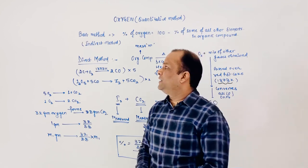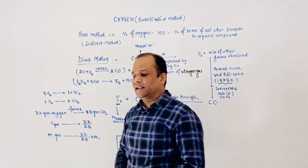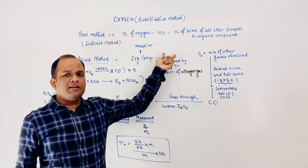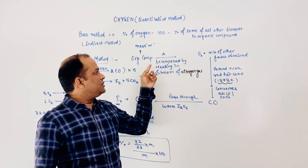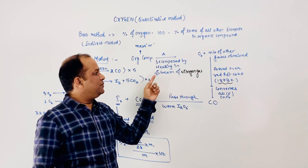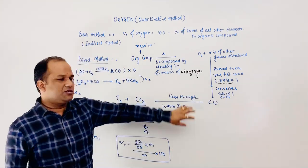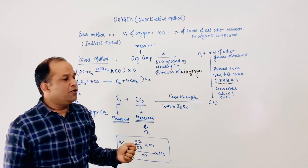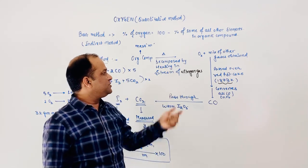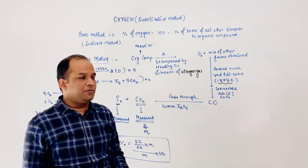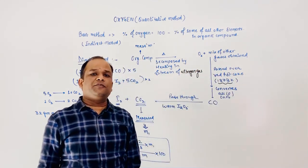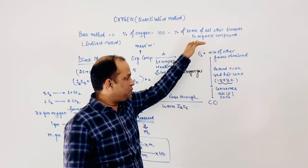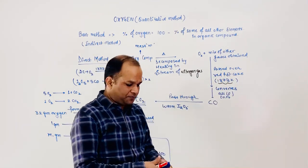We can also find out the percentage of oxygen by a direct method. In one direct method, take M amount of organic compound and strongly heat it to cause decomposition in a stream of nitrogen gas. After decomposition, oxygen plus a mixture of other gaseous substances is obtained.